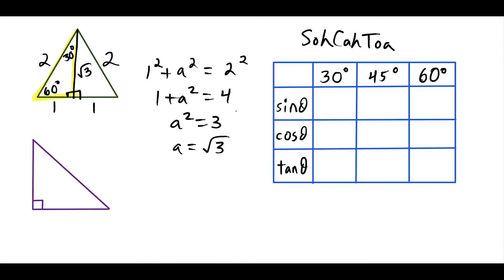Now we can start using these ratios. The mnemonic SOH-CAH-TOA helps us remember: sine is the ratio of the side opposite over the hypotenuse. Starting at the 30-degree angle, the side opposite 30 is one unit long, and the hypotenuse is two units long. So sine of 30 degrees is equal to one half.